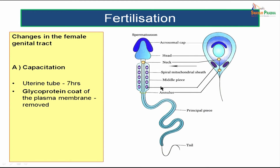What are the changes happening for the sperm in the female genital tract? There are two main changes. The first one is known as capacitation. Capacitation actually happens in the uterine tube and it usually takes about seven hours. During those seven hours, the glycoprotein coat of the plasma membrane over the sperm is actually removed during the process of capacitation.